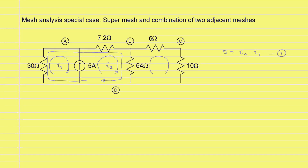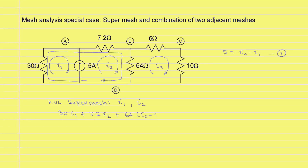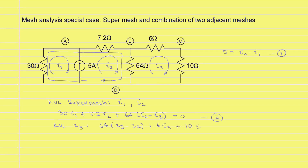We will also define the current for the third mesh as I3. We write the KVL for the super mesh, which is the combination of the meshes defined by the currents I1 and I2, and it will give us a voltage drop of 30 I1 across the 30 ohm resistor, plus a voltage drop of 7.2 I2 across the 7.2 ohm resistor, and finally a voltage drop of 64 I2 minus I3 across the 64 ohm resistor, and this must be equal to zero to satisfy KVL. This is the second equation. The last equation is the KVL for the mesh defined by the current I3, which gives a voltage drop of 64 I3 minus I2 plus a voltage drop of 6 I3 plus a voltage drop of 10 I3 is equal to zero.